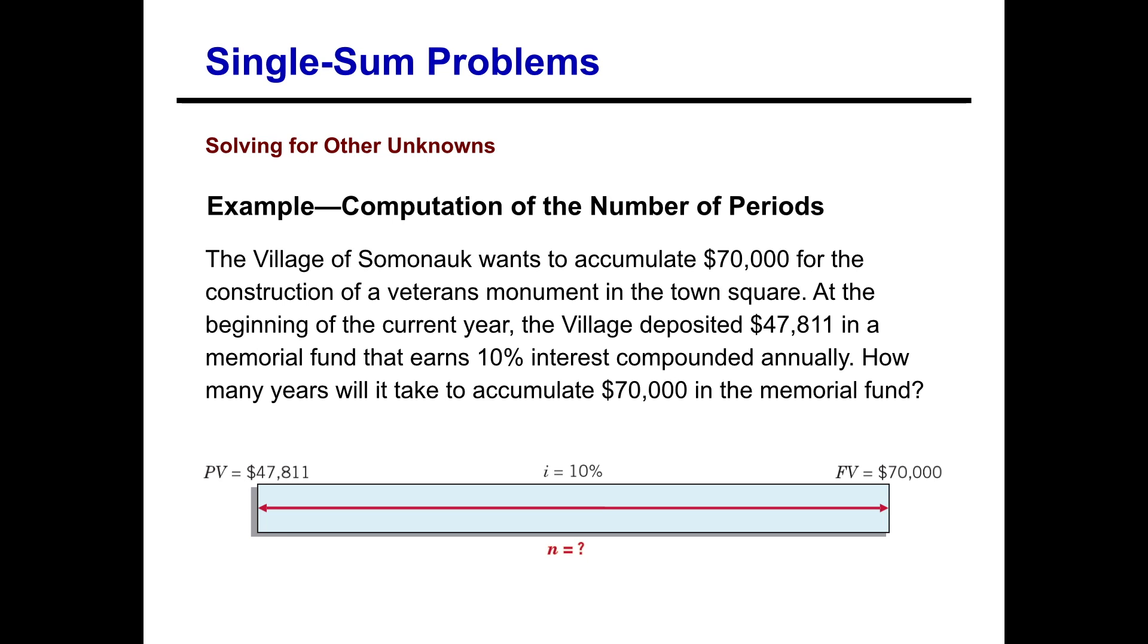Let's first look at solving for the number of periods in the equation there. So the Village of Sumonok wants to accumulate $70,000 for the construction of a veterans monument in the town square. At the beginning of the current year, the village deposited $47,811 in a memorial fund that earns 10% interest compounded annually. How many years will it take to accumulate $70,000 in the memorial fund? So as you can see, we know lots of information, but we don't know how many years it's going to take. So we're looking for our n as you can see in the timeline here.